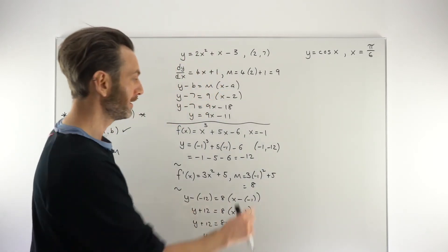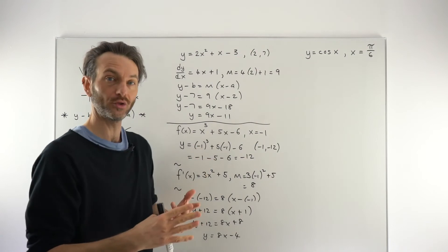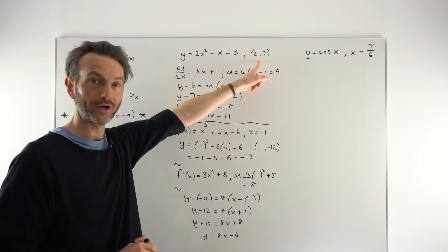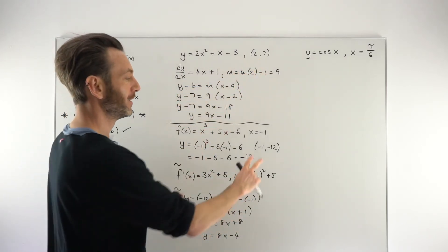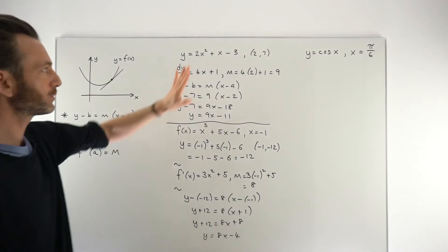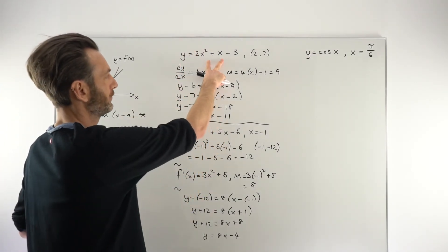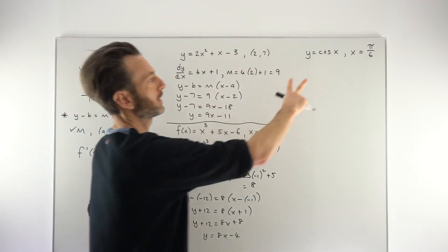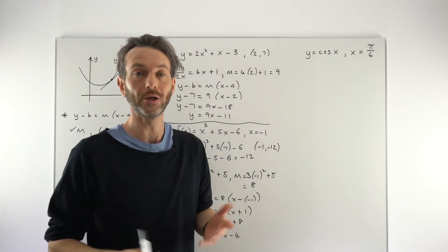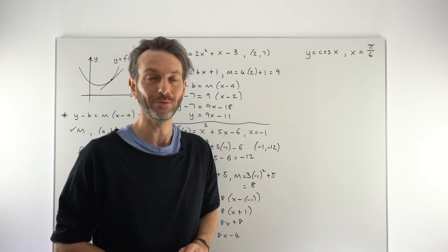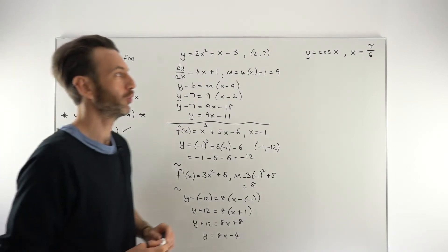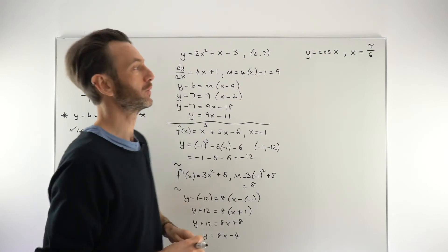A little bit more work involved in that one, primarily because they only give us the x-value of the point of tangency, which is actually more common than getting the full coordinate. These were both polynomial functions — a quadratic and a cubic. Let's take a look at a trigonometric function, which is also fairly common. In fact, this technique can apply to any type of function, so as long as you can differentiate it using some differentiation rule, you're good to go and you'll still use the same technique.